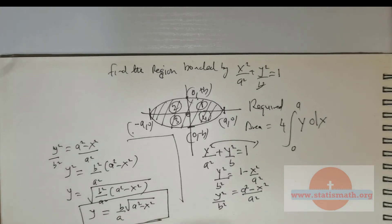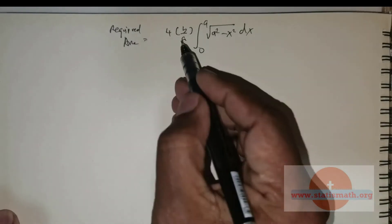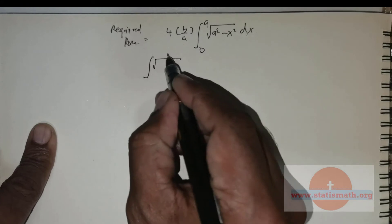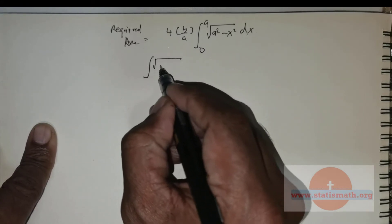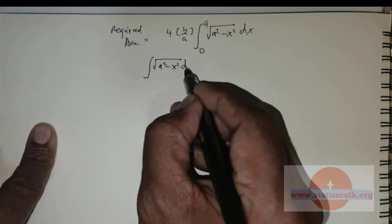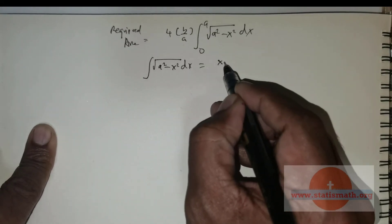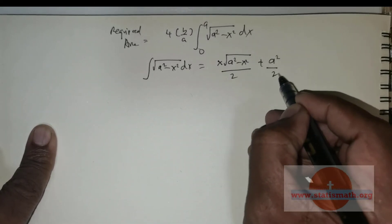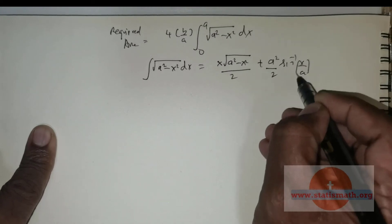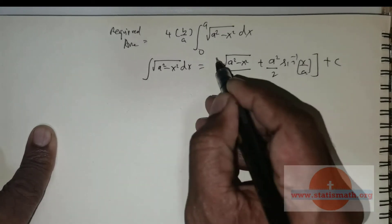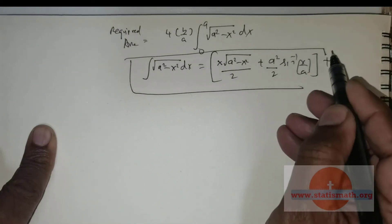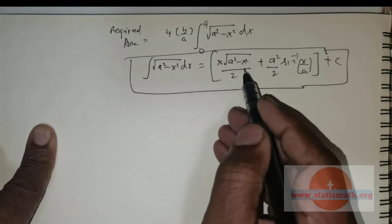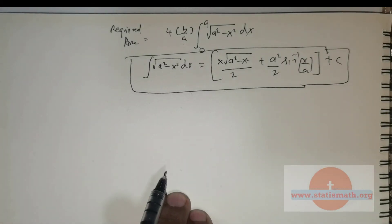So this is what you have to integrate. We can directly apply the formula. The formula is: the integral of the square root of a squared minus x squared dx equals x times the square root of a squared minus x squared divided by 2, plus a squared over 2 times sine inverse of x over a, plus c. If you are not able to obtain this or do not want to use this formula, you can obtain this result by integration by substitution.